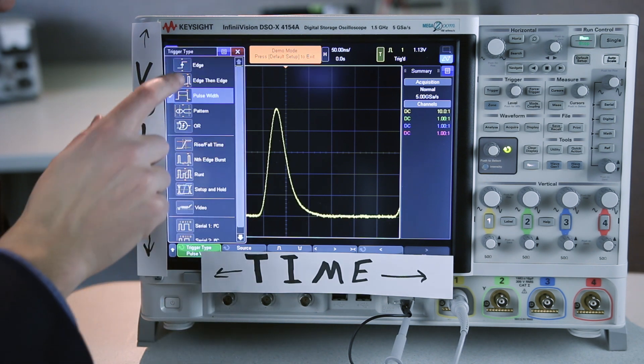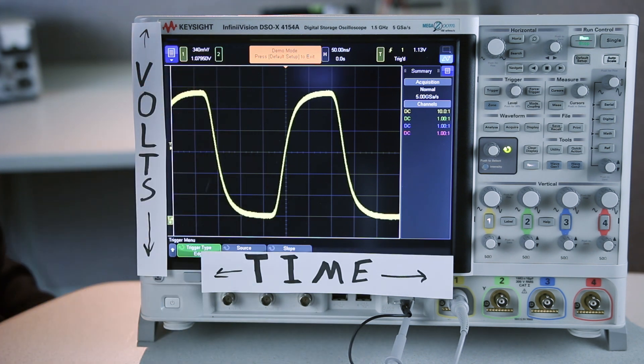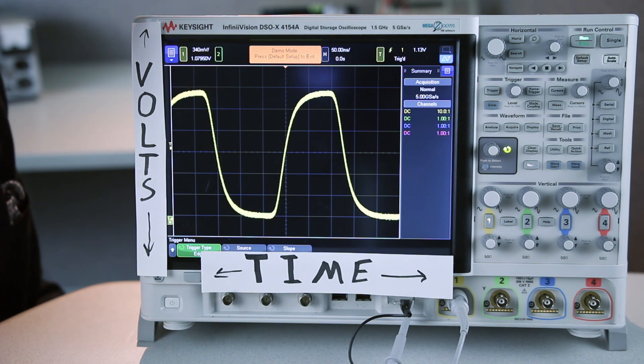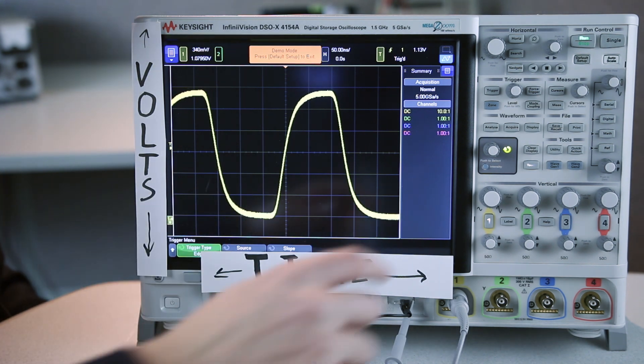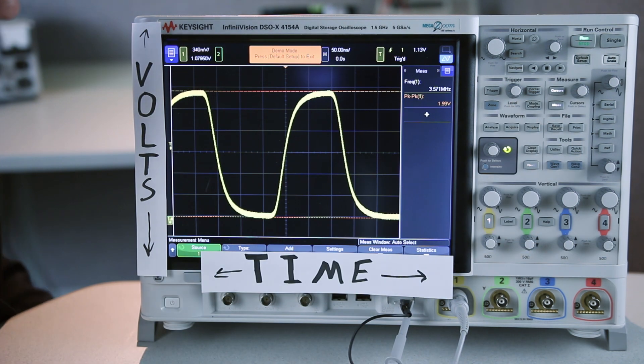If I go back to my edge trigger, you can see that my signal actually has a lot more going on. The last thing we're going to talk about today is how to make measurements. On old analog scopes, you'd have to go in and count the divisions and figure out how wide this pulse is. Modern digital scopes now have a measure button and they're going to make those measurements for you automatically.